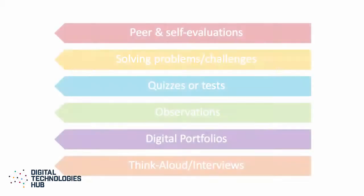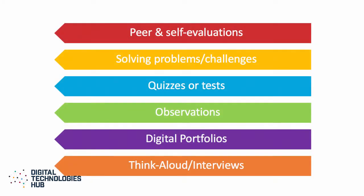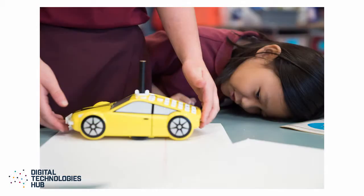Examples of formative assessments could include peer and self evaluations where students provide feedback on an initial project design or code. Another example could be tasks in which students encounter a very similar problem but within a new context to test their ability to apply and transfer learned skills and knowledge, such as navigating a robot to solve a new problem.